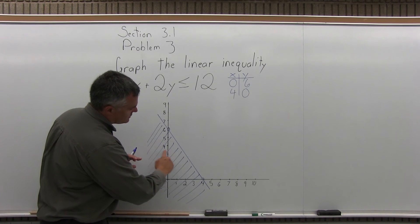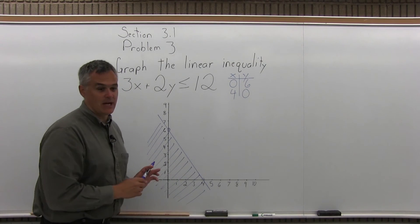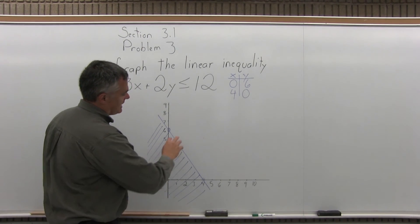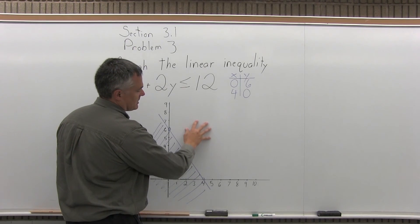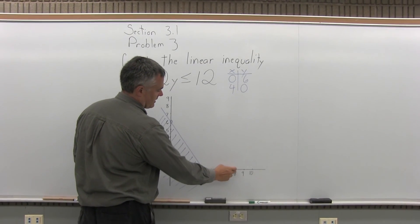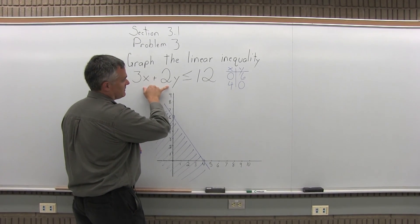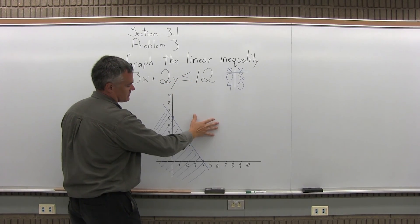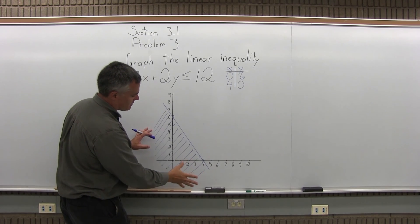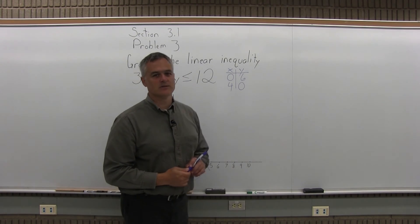So if I had chosen any point from the underneath side, it would have given me a true result. And any point that I would have chosen from the blank region, let's say I chose like over 8 up 3, it would have given me a false result. Like 15 is smaller than 12, which isn't true. So it doesn't matter which test point you pick, it's just that 0, 0 is very easy to use.